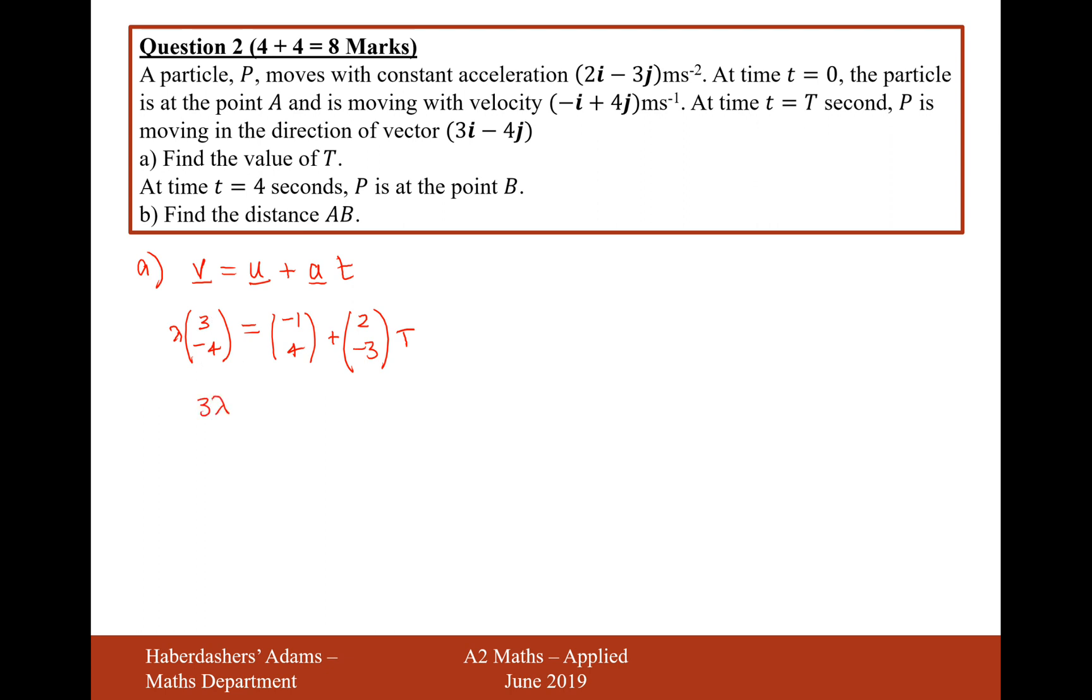3λ equals -1+2T, and -4λ equals 4-3T. Now, hopefully it makes sense why we need this lambda in here. We need the lambda because the question just says at time t, P is moving in the direction of vector 3i-4j. So it could be 6i-8j, or 9i-12j, or some scale factor of this vector here. The scale factor is potentially what we might need to work out, but T is really what we want to work out, definitely.